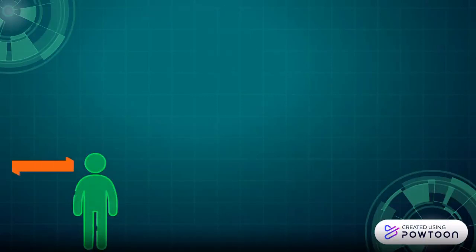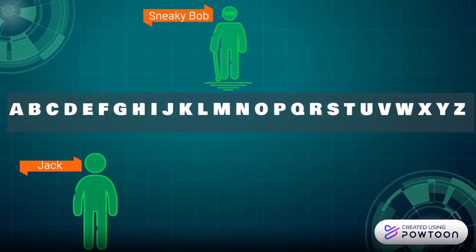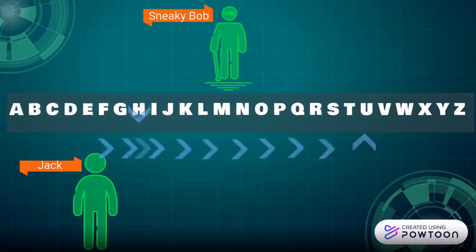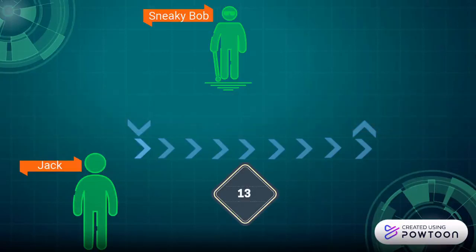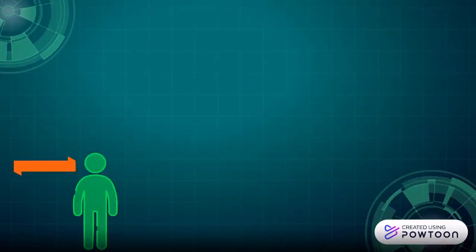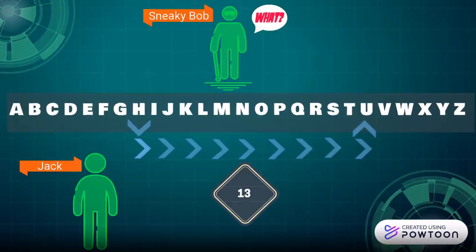What Jack will basically be doing is that when he wants to choose a letter for forming his message, the letter sent is the letter away from the chosen one by 13 positions. Because of that, when Jack sent 'Hello' before, the first letter was U instead of H. In this way, the sneaky Bob will completely be lost. In conclusion, ROT13 — rotate by 13 places — is a simple letter substitution cipher that replaces a letter with the 13th letter after it in the alphabet.